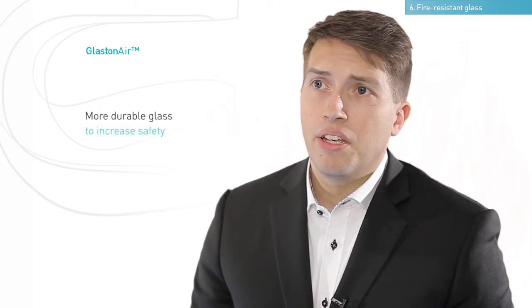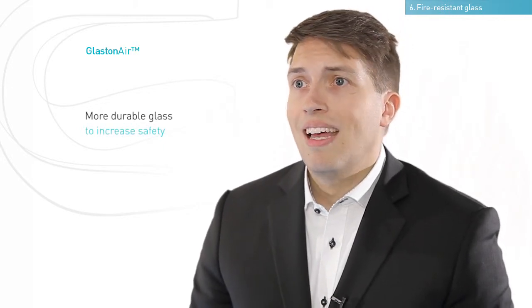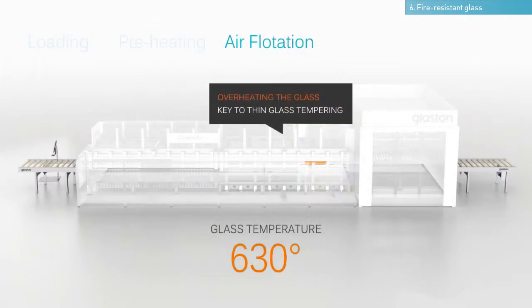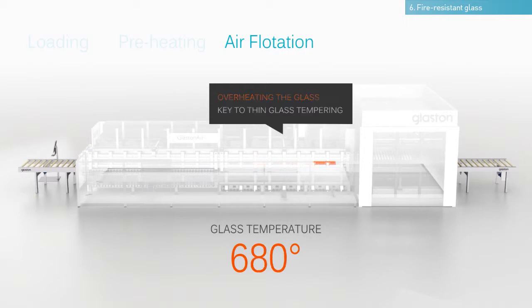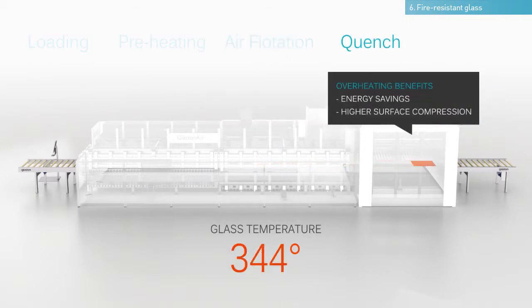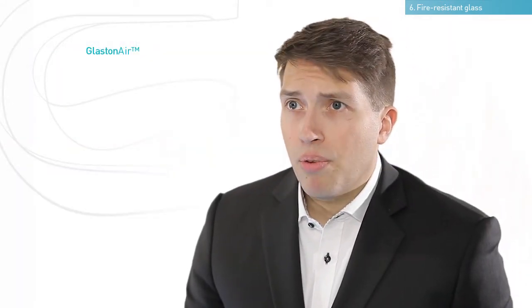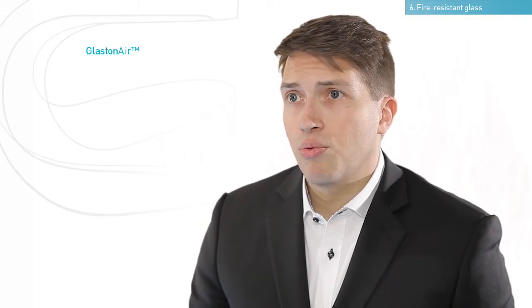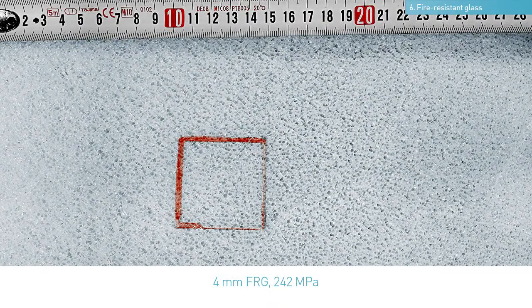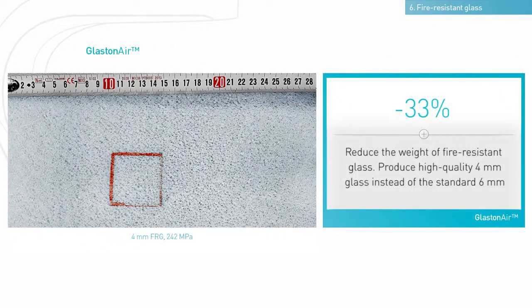Glaston air meets increased safety criteria as it is capable of heating the glass to a higher temperature than in the standard tempering process, thereby producing significantly higher surface compression values. Glaston air is able to super temper even a 4mm glass with a surface compression of well above 200 MPa — something that would be impossible for roller-type furnaces without ruining the glass quality.